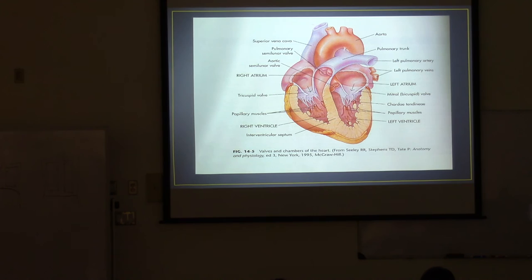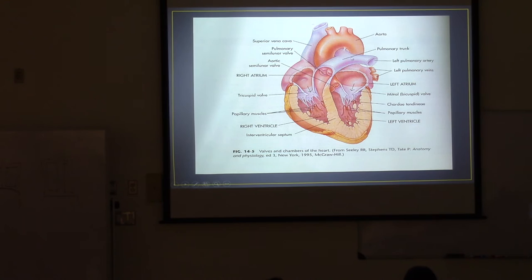When looking at a picture, the right and left are opposite us. Looking on the left side of the image, we see the right ventricle. When blood pumps and leaves the right ventricle, it goes into the pulmonary artery — deoxygenated blood traveling to the lungs to pick up oxygen. When blood comes back from the lungs, it goes into the left atrium, then into the left ventricle, and when the heart contracts, it pushes blood from the left ventricle into the aorta and to the rest of the body.